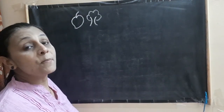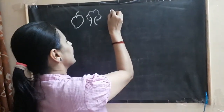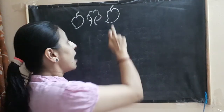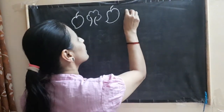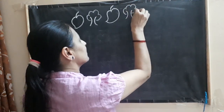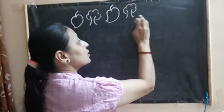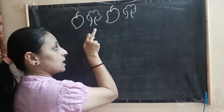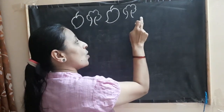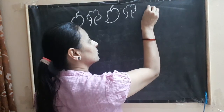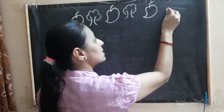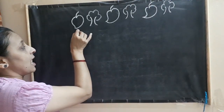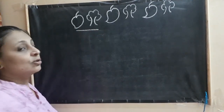Now what will come next? Yes, the next will be a mango again. Now after mango, what should come? A tree — very good! After tree, should I draw a tree again? No, because we have drawn a pattern of mango and tree. So here: mango, tree, mango, and the next will be tree. We have drawn a pattern of mango and tree.